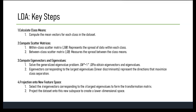Next, we compute the scatter matrices. The within-class scatter matrix SW measures the spread or dispersion of data points within each class. It is computed by summing up the scatter matrices for individual classes. Each class's scatter matrix represents how much the data points within that class deviate from their class mean.